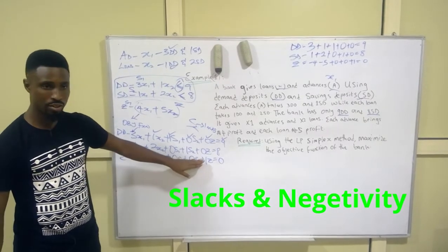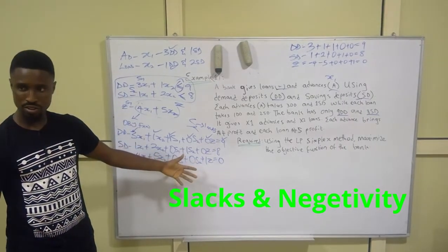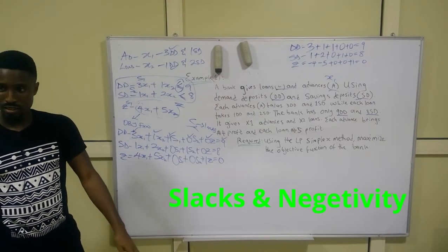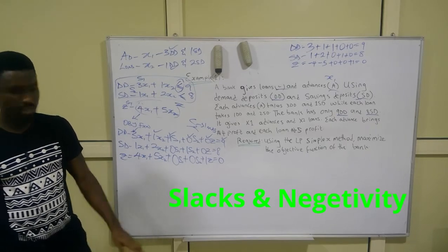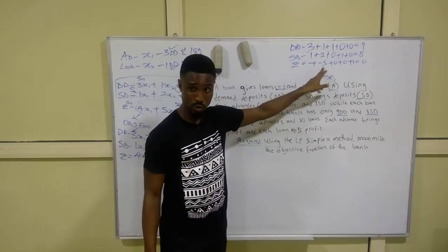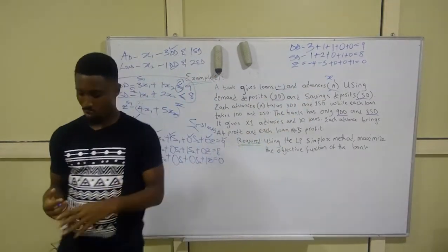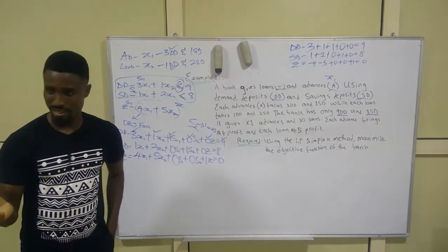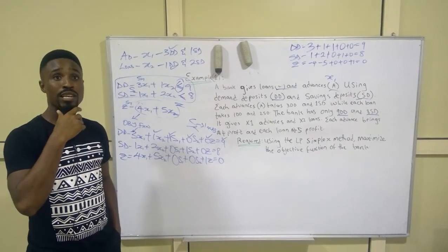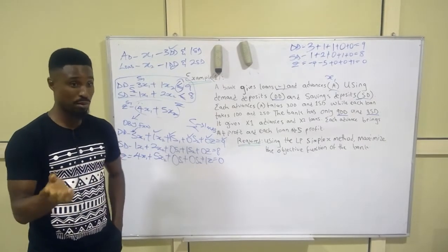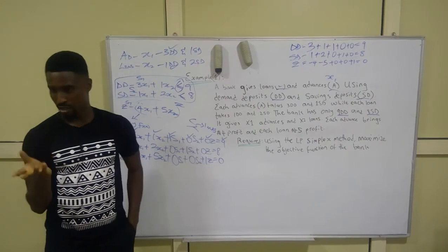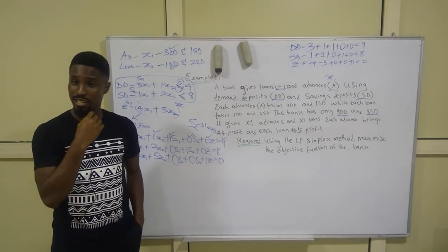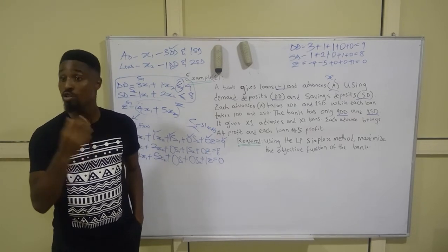Why are these negative? The slacks have no real existence — they are just representations. The reason for the minus signs on −4 and −5 comes from rational behavior explained by a simple analogy.